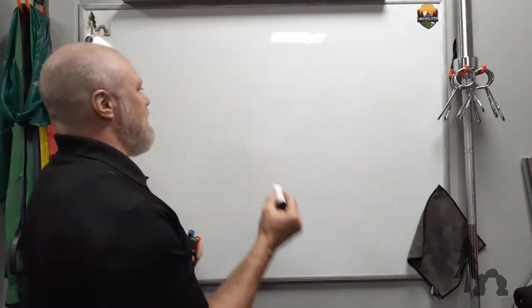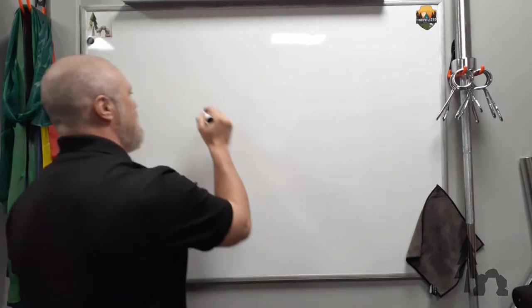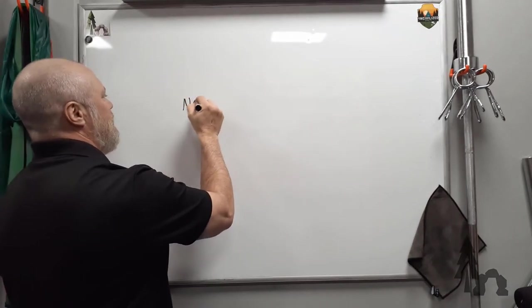The nervous system itself, nervous tissue, is made up of two types of cells. Again, broad strokes here. You're going to get neurons.